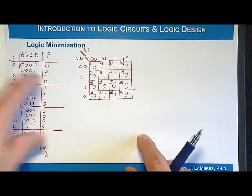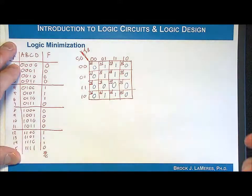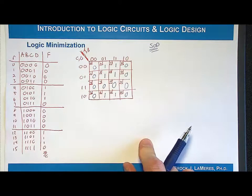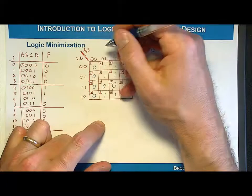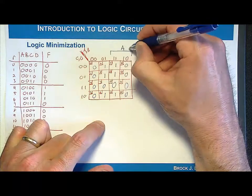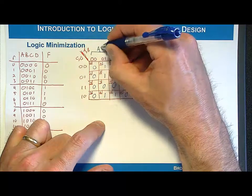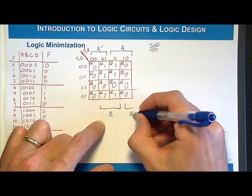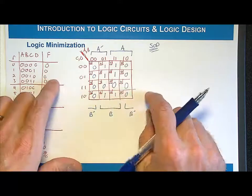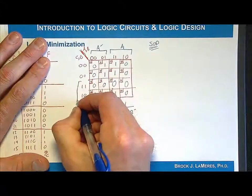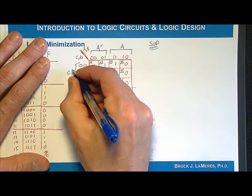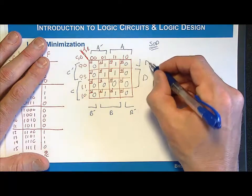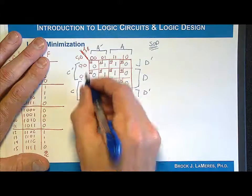The last step is to label where variables are 1s and 0s for SOP synthesis. A is 1 for these two middle columns, labeled A, and A is 0 for the outer two columns, labeled A-naught. B is 1 for the right two columns, and B is 0 for the left two columns, labeled B-naught. For C and D on the rows: C is 1 for the bottom two rows and C is 0 for the top two rows. D is 1 for the middle two rows, with a wraparound where D is 0 for the outer rows.